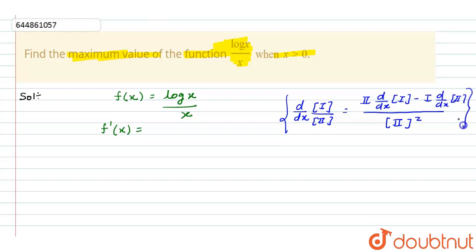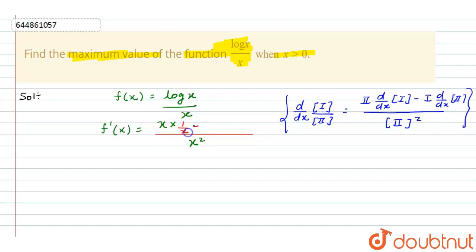Now applying the quotient rule to find f'(x): in the denominator we have x squared, then x outside times the differentiation of log(x) which is 1/x, minus log(x) as it is times the differentiation of x, which is 1.